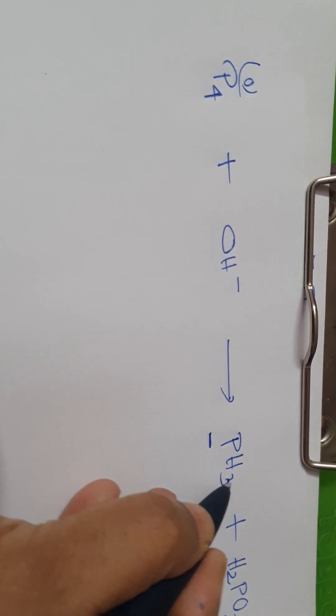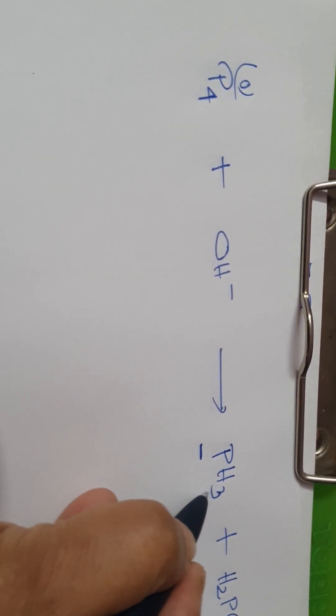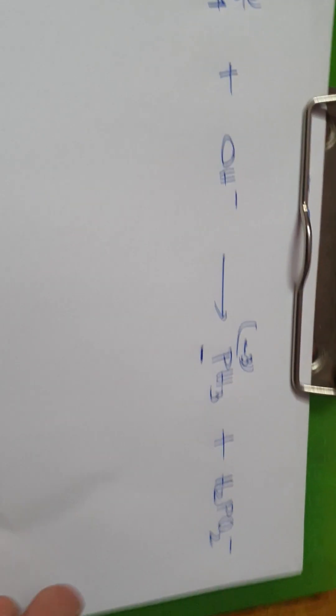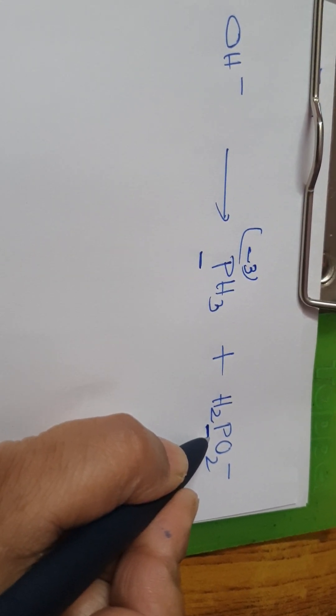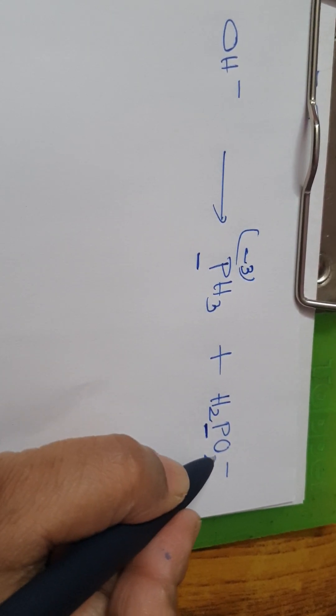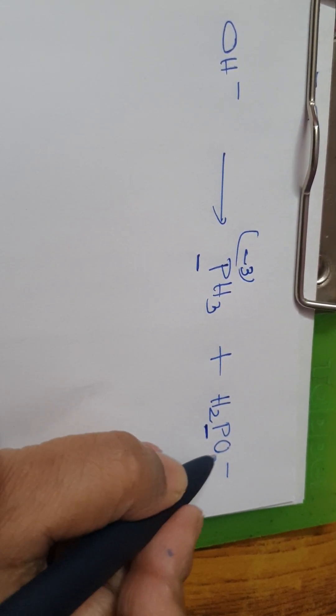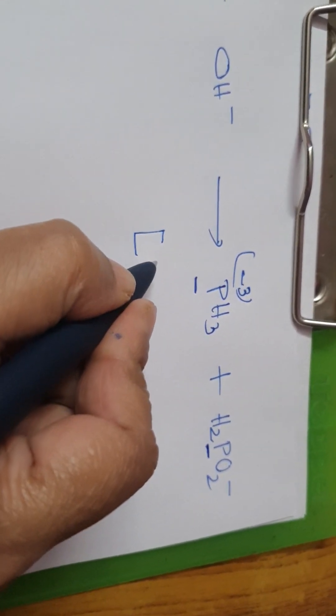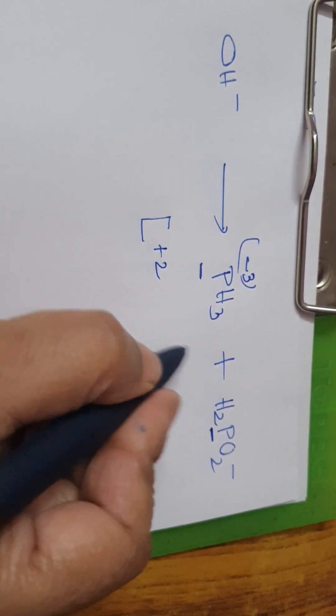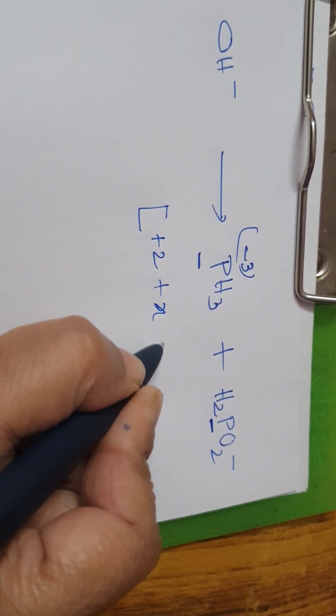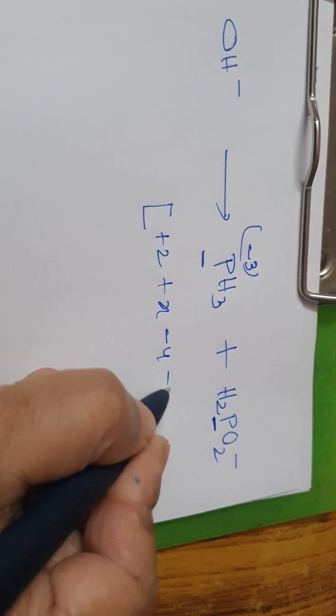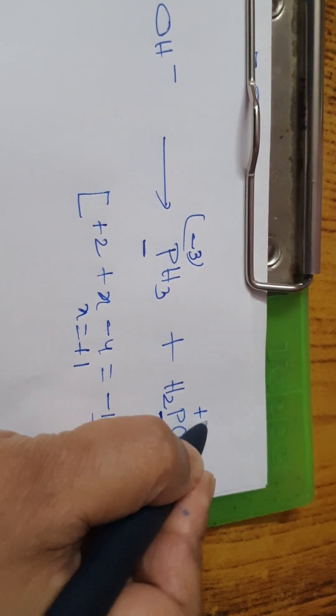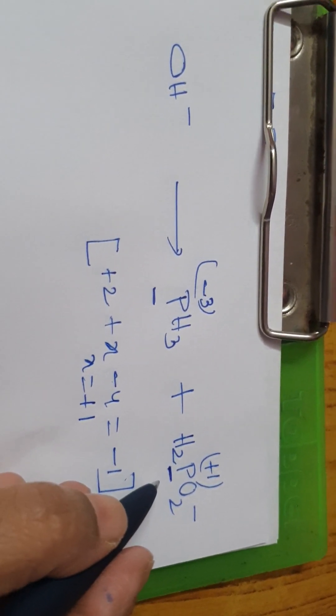And what is the oxidation number of phosphorus in PH3? Each hydrogen is plus 1, 3 hydrogen gives plus 3, so each phosphorus should be minus 3. And now you have to find out the oxidation number of this phosphorus. Both the hydrogen gives plus 2, each oxygen minus 2, so both the oxygen gives minus 4. And here it is minus 1. Let me solve: hydrogen plus 2, phosphorus is X, 2 oxygen gives minus 4, equal to minus 1. So if we solve it, then X is equal to plus 1. So obviously, phosphorus oxidation state here is plus 1.